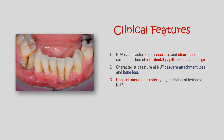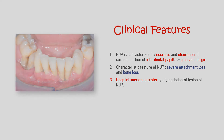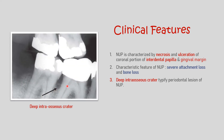NUP is characterized by necrosis and ulceration of the coronal portion of the interdental papillae and gingival margin. From the picture, you can see these small interdental papillae and the gingival margin undergoing necrosis and ulceration. A characteristic feature, as mentioned earlier, is severe attachment loss and bone loss, with the formation of deep intraosseous craters — deep crater-like structures forming in necrotizing ulcerative periodontitis.